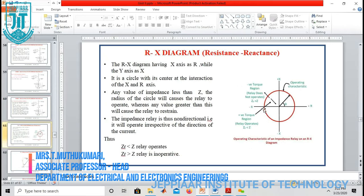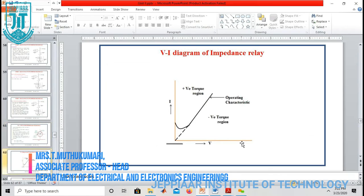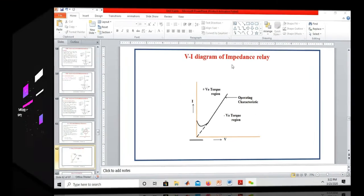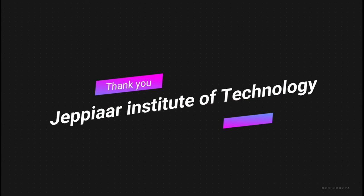This is the RX diagram. On the RX diagram, the X-axis represents resistance and the Y-axis represents reactance. If ZF is less than Z, the relay operates; if ZF is greater than Z, the relay is inoperative. This is the VA diagram of the impedance relay — in one region it is called the positive torque region and the other region is called the negative torque region.